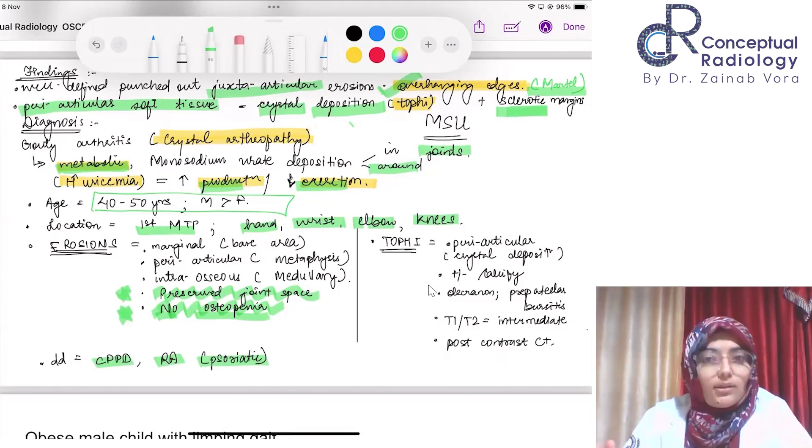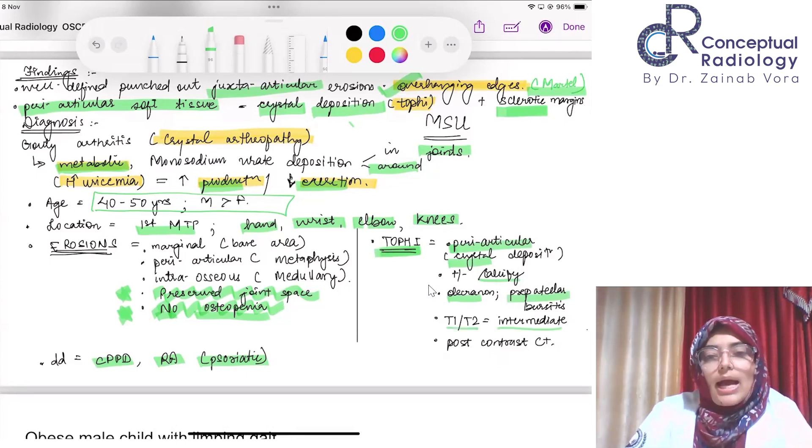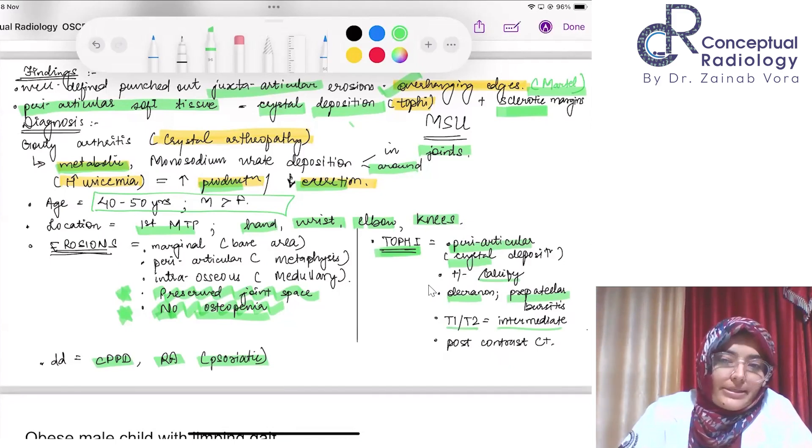About the tophi: these are periarticular crystal depositions. Sometimes they may undergo calcification. Other places apart from the great toe are your olecranon or associated prepatellar bursitis. On T1 and T2, they have intermediate signal and might show some mild post-contrast enhancement. This was in short a holistic view about gouty arthritis and in general about crystal deposition arthropathies. Now we shall move on to the next OSCE.